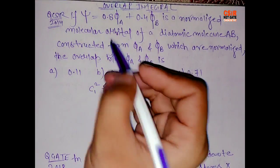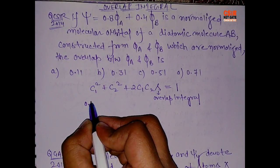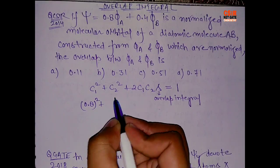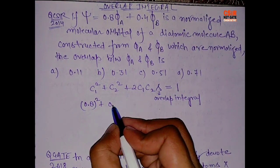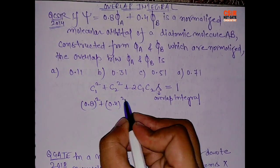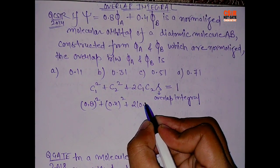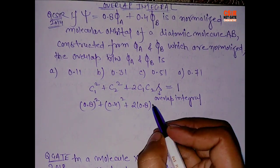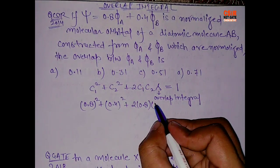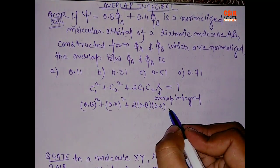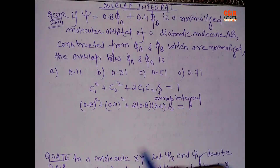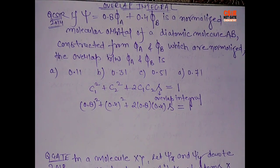Now just apply these constants in this formula and we will get the answer. So c1 is 0.8 square plus c2 is 0.4, plus 2 times c1 is 0.8 and c2 is 0.4, and this s equals to 1. Now just solve the basic calculation.